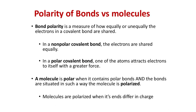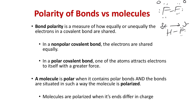Bond polarity is a measure of how equally or unequally electrons are shared in a covalent bond. A more unequally shared bond is more polar; a perfectly equally shared bond is non-polar — for example F2, where both atoms have the same electronegativity. HF, by contrast, is a highly polar bond with large partial charges. A molecule is polar when it contains polar bonds situated such that the molecule is polarized — meaning its ends differ in charge.